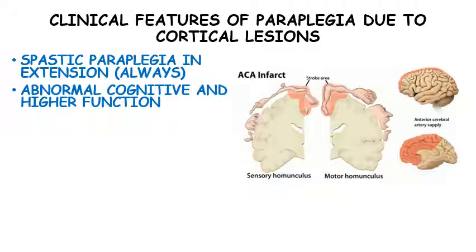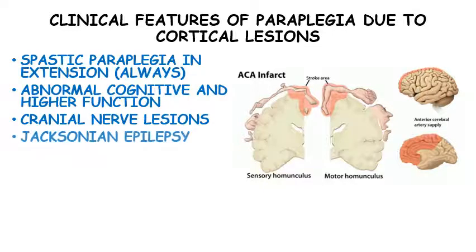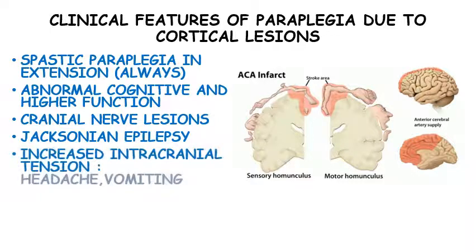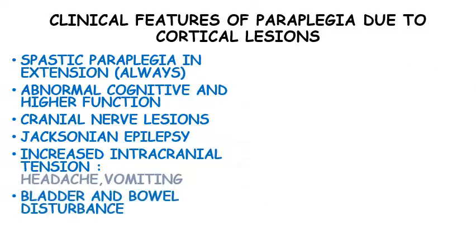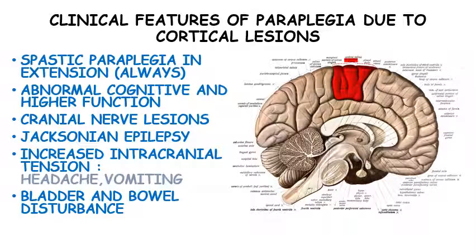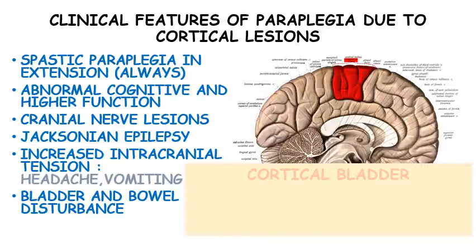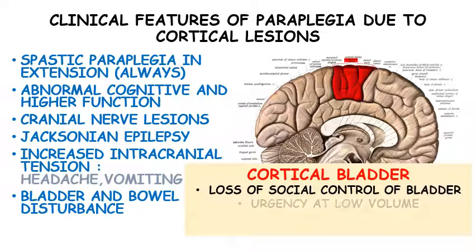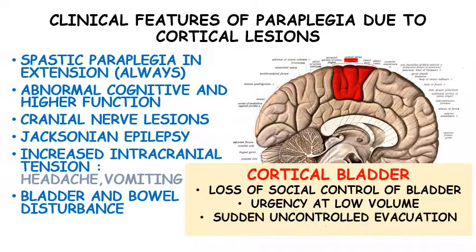The frontal lobe is important for cognitive and higher functions, so there will be abnormalities in those modalities too. There may be associated cranial nerve palsies as well as focal neurological disturbances leading to partial seizures like Jacksonian epilepsy, and features of raised intracranial tension like vomiting and headache. One important area supplied by branches of the anterior cerebral artery is the paracentral lobule, which controls bladder and bowel movements. Hence the paracentral lobule gets affected, leading to what we know as cortical bladder, characterized by loss of voluntary bladder control, urgency at low volume, and involuntary bladder evacuation even in socially inappropriate situations.